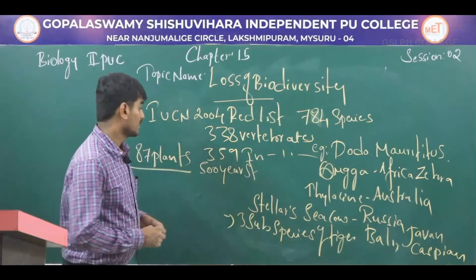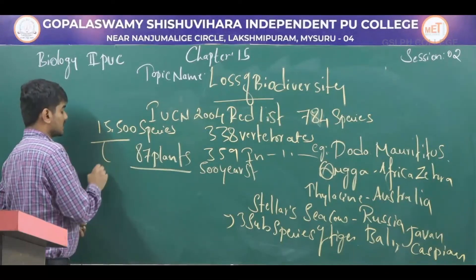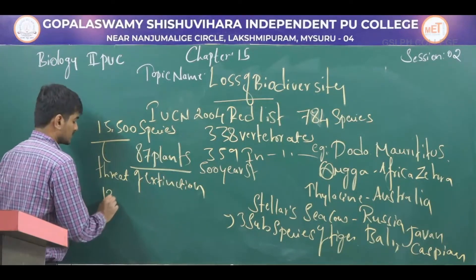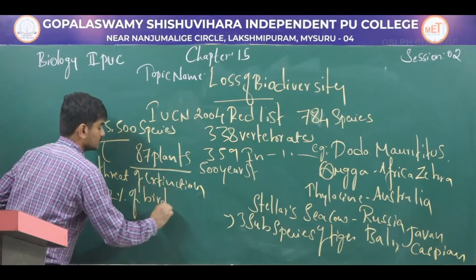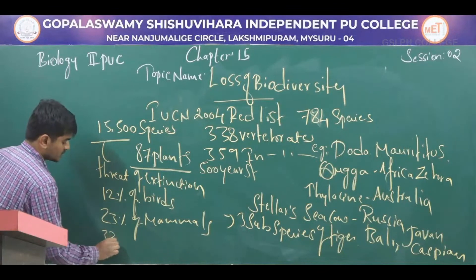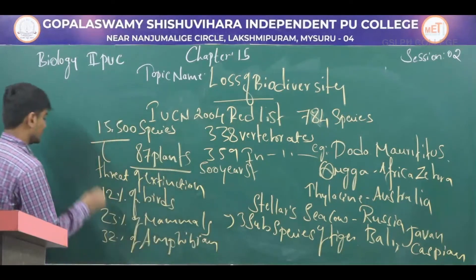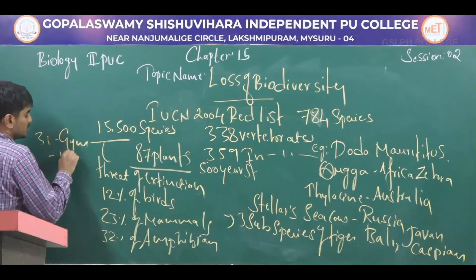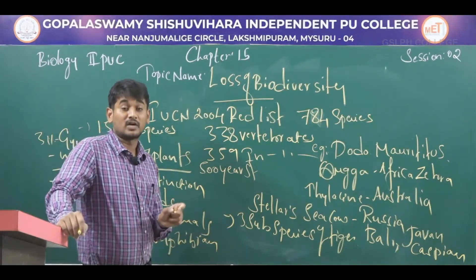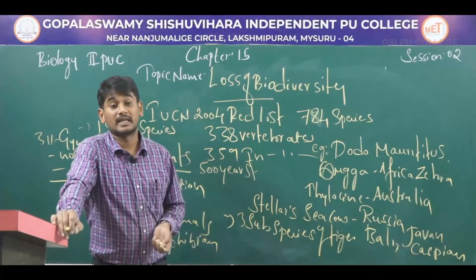Along with these extinct species, 50,500 species are facing the threat of extinction. This includes 12% of birds, 23% of mammals, 32% of amphibians, and 31% of gymnosperms. The current extinction rate is 100 to 1,000 times faster than pre-human times. If this trend continues, 50% of species may be extinct within the next hundred years.